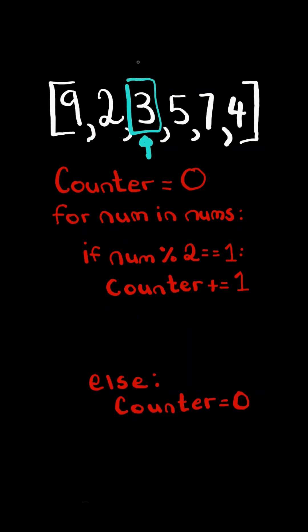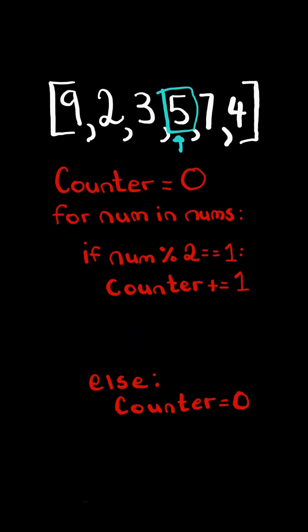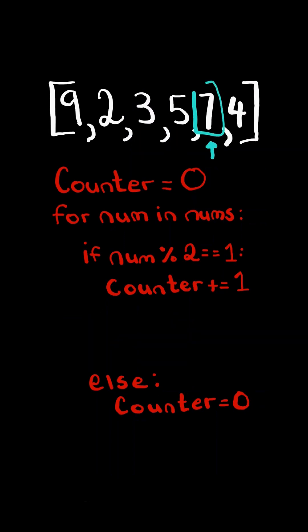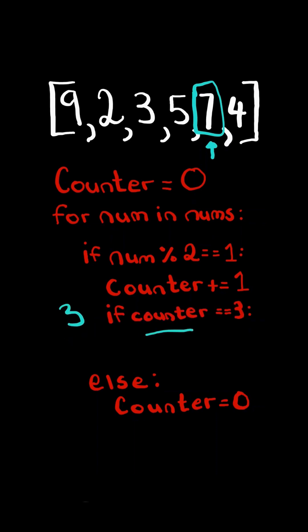Three is an odd number, so we increment our counter to one. Five is odd, so our counter would increment to two. Seven is odd, so our counter would increment to three, and if the counter equals three, we return true.